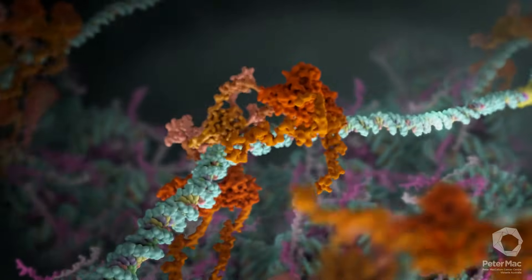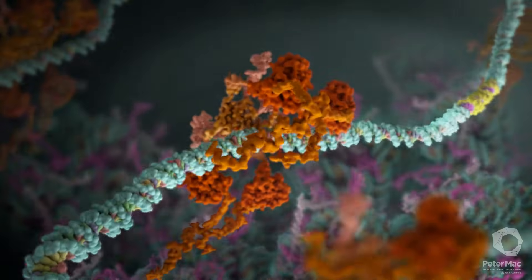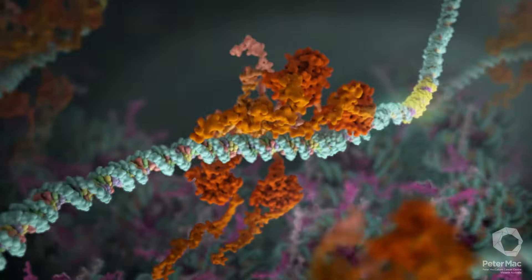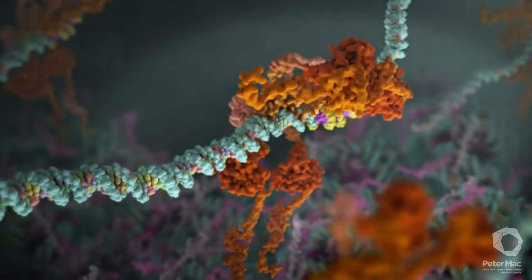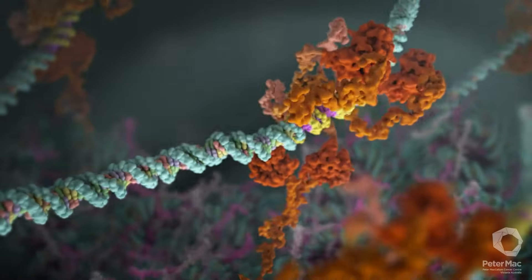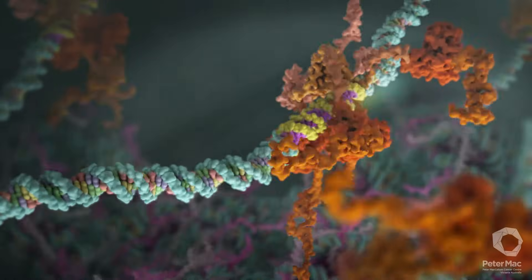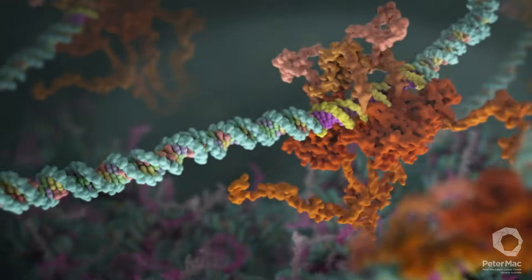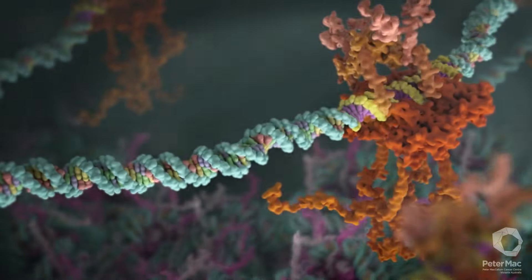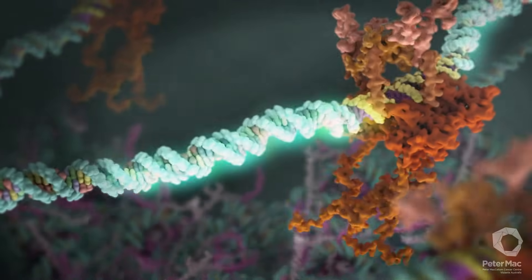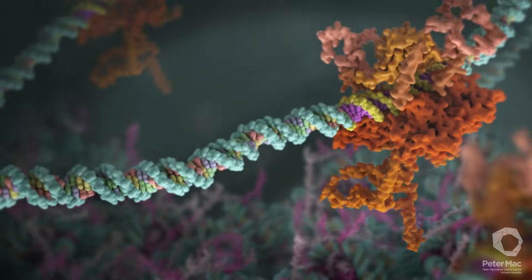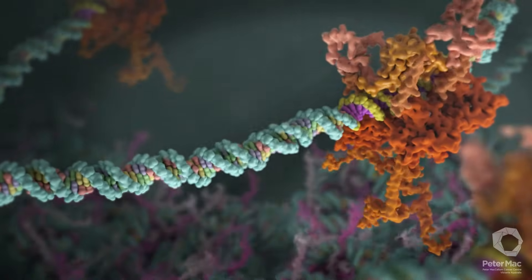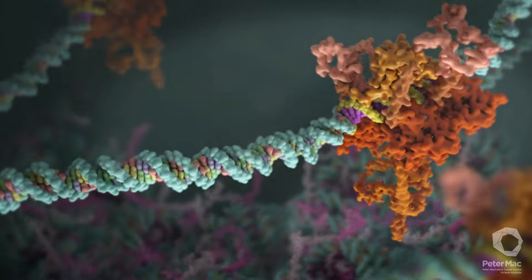P53 slides along the DNA until it finds a critical site. It then binds to this site. P53 then sends the message to halt cell division until DNA is repaired, or if damage is too severe the cell is destroyed. P53 is therefore known as the guardian of the genome.